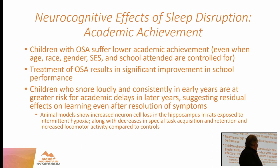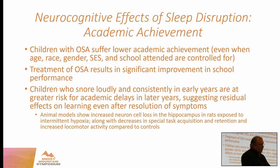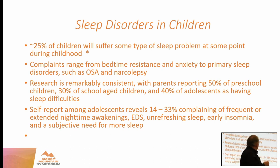Animal models have shown increased cell loss in the hippocampus in rats exposed to intermittent hypoxia. While we can't really prove apnea in rats, we can show the hypoxia, and along with that, task acquisition is decreased and degraded compared to control groups. According to the American Academy of Pediatrics, 25% of all children are going to have a sleep problem at some point during their childhood.